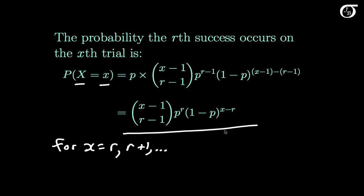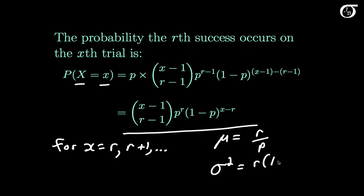It can be shown that the mean of this probability distribution is r over p, and the variance is r times 1 minus p over p squared.